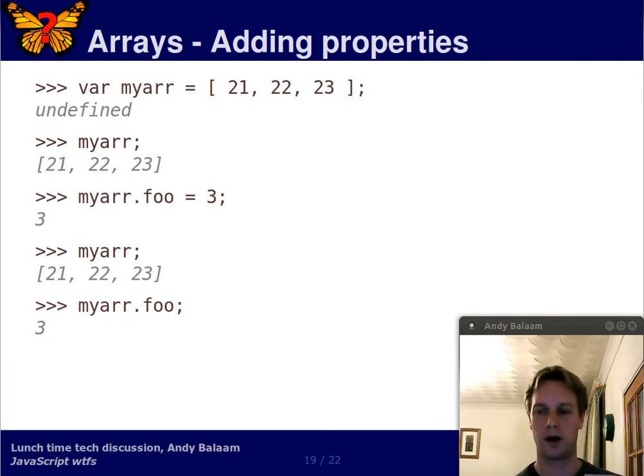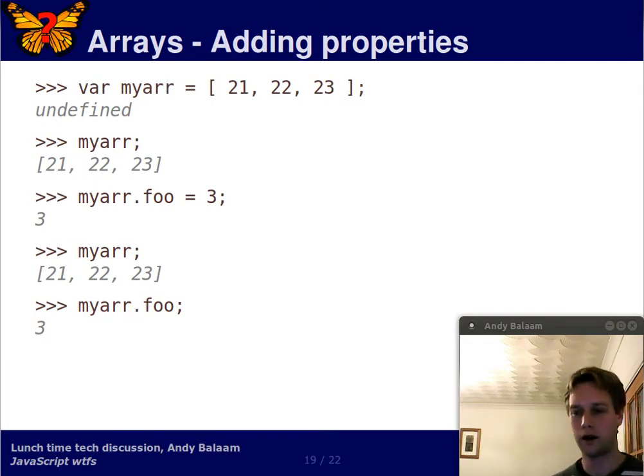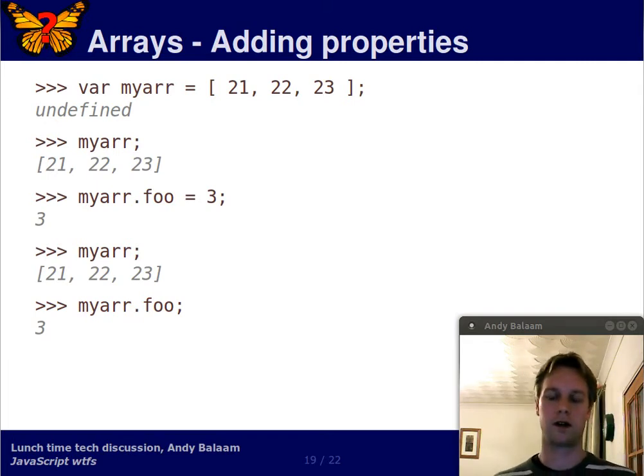But more than that, what's in myArror is the property 0 with the value 21, the property 1 with the value 22, and the property 2 with the value 23, and the property foo with the value 3. And this is what I mean. Arrays are just objects with a couple of special powers.